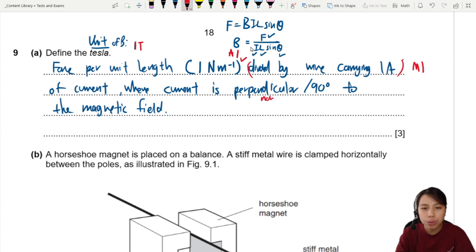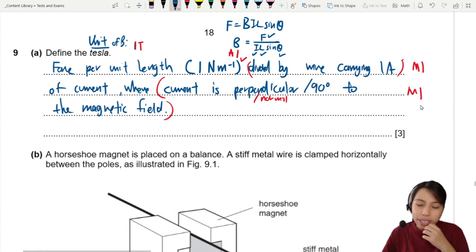Perpendicular or normal to. Current perpendicular to magnetic field. That's another one. And then Newton per meter. So in this case, you see the M1, A1 combo, right? You must get the M1. Only you can get the A1. That's generally how they write it like that.